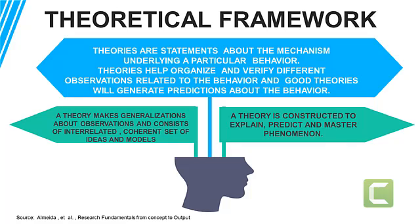Now let us proceed to theoretical framework. Theories are statements about the mechanisms underlying a particular behavior. Theories help organize and verify different observations related to behavior, and good theories will generate predictions about the behavior. A theory makes generalizations about observations and consists of an interrelated, coherent set of ideas and models. A theory is constructed to explain, predict, and master phenomenon.